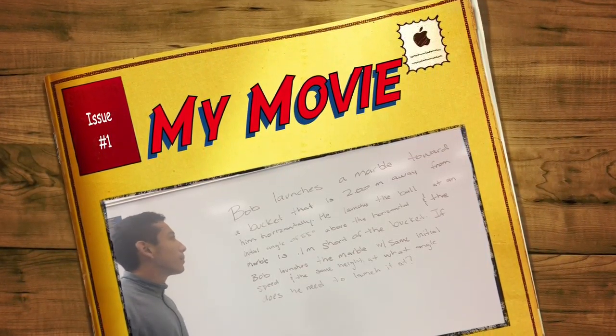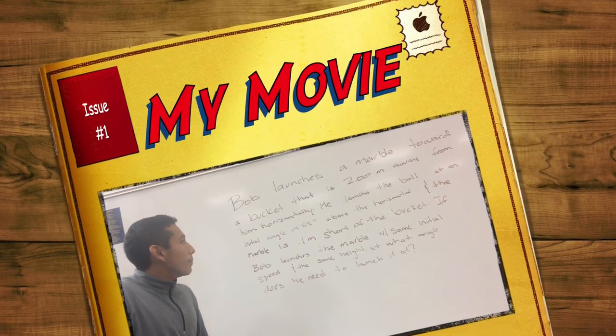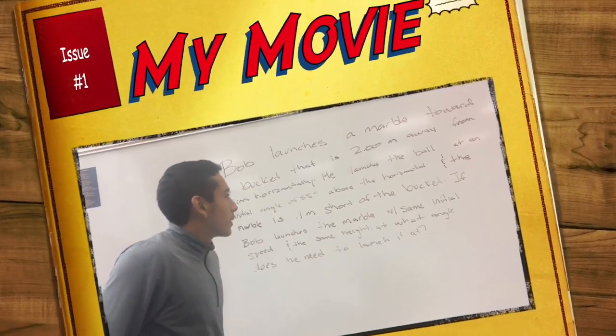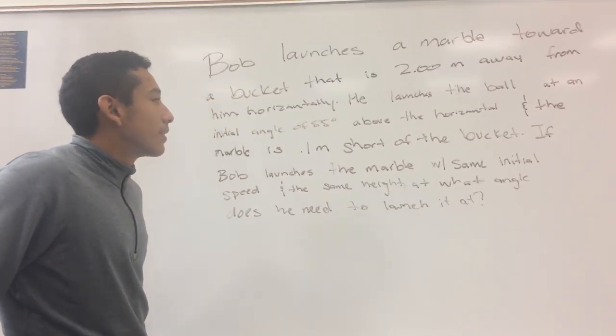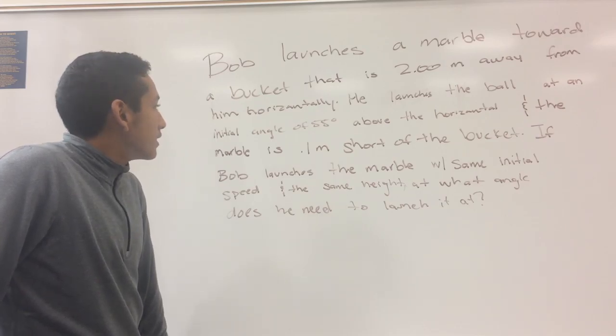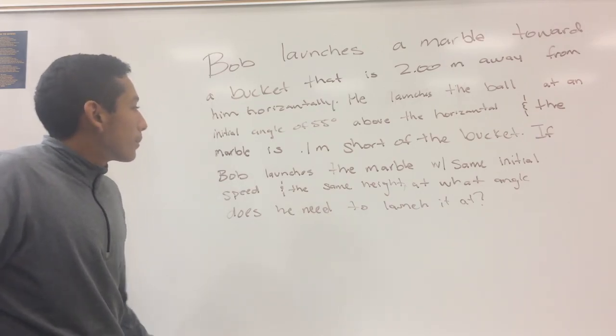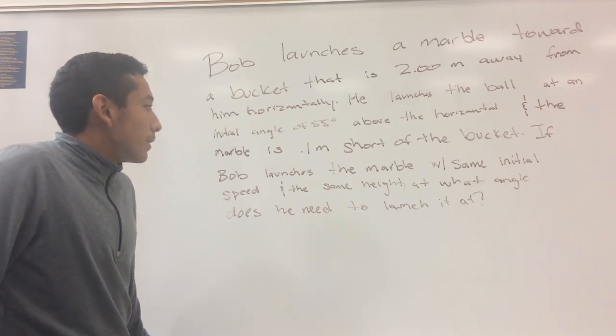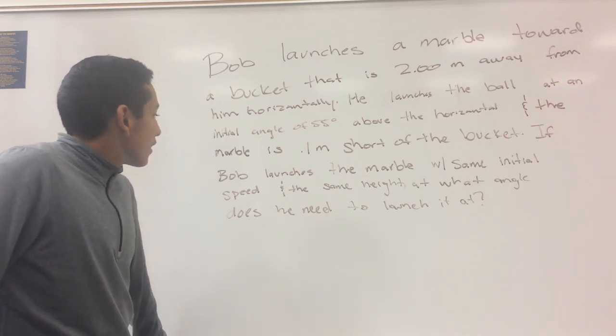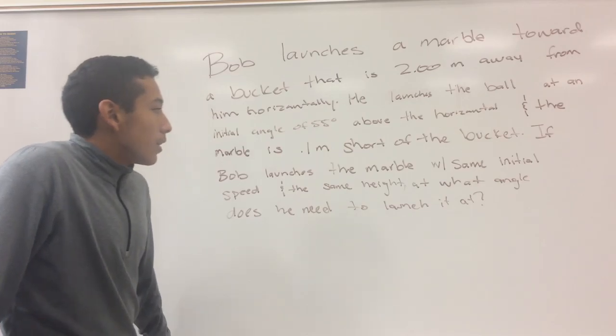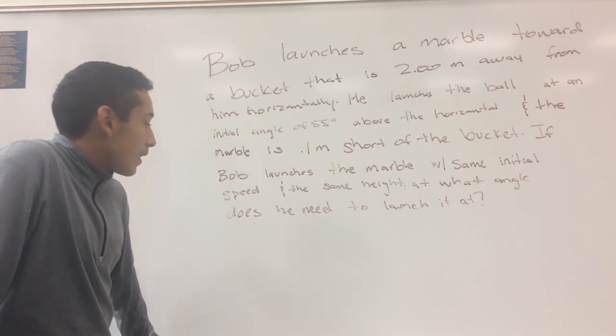The problem is Bob launches a marble toward a bucket that is two meters away from him horizontally. He launches the ball at an initial angle of 55 degrees above the horizontal, and the marble is 0.1 meters short of the bucket. If Bob launches the marble with the same initial speed and the same height, at what angle does he need to launch it at?